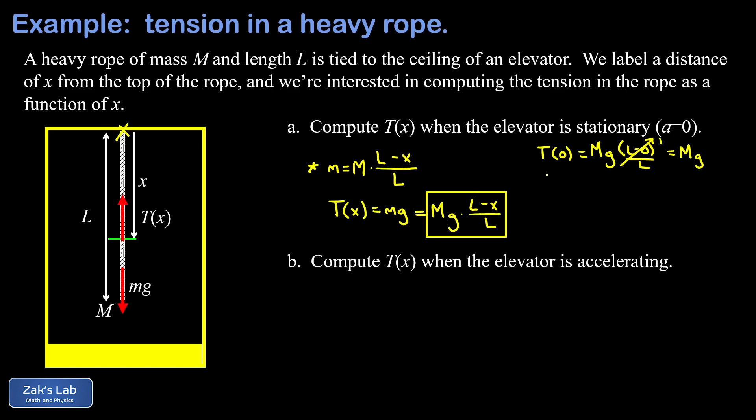The other extreme of the problem is when x is equal to l. When x is equal to l, we're at the very bottom of the rope. And at that point, there is no mass to hold up. So the tension should be zero.